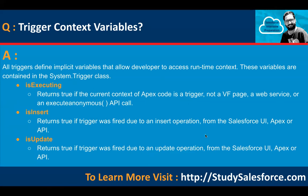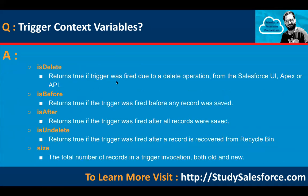'isUpdate' returns true if the trigger was fired due to an update operation. 'isDelete' returns true if the trigger was fired due to a delete operation. We write isInsert, isUpdate, isBefore, etc. in trigger code to identify the context — for example, to call an Apex method only when a record is inserted, check the isInsert context. 'isBefore' returns true if the trigger fired before any record was saved; 'isAfter' fires when a record is saved to the database. 'isUndelete' returns true if the trigger fired after a record was recovered from the recycle bin. 'size' checks the total number of records in an invocation, both old and new.